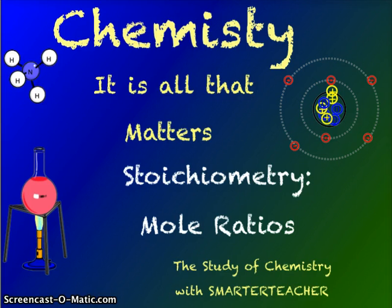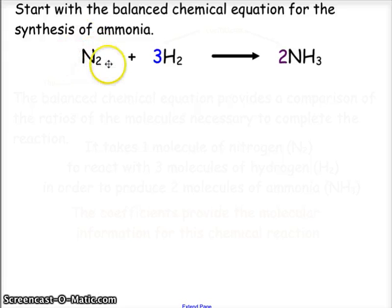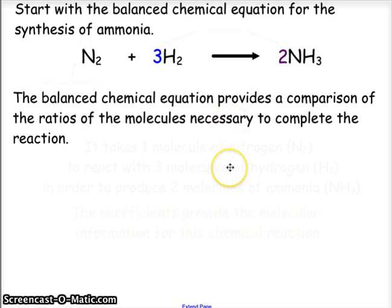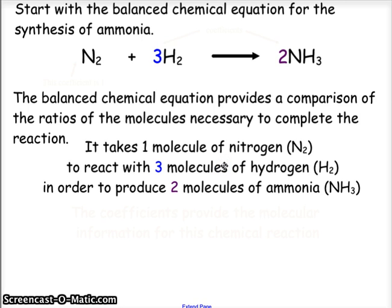Let's look at some samples of how to determine the mole ratio. We'll start with the basic balanced chemical equation for the synthesis of ammonia: nitrogen combining with hydrogen producing ammonia, N2 plus H2 yields NH3. The coefficients we place to balance the equation play an important role in the mole ratio. The balanced chemical equation provides a comparison of ratios of molecules necessary for completion of the reaction — one molecule of nitrogen reacts with three molecules of hydrogen to produce two molecules of ammonia.